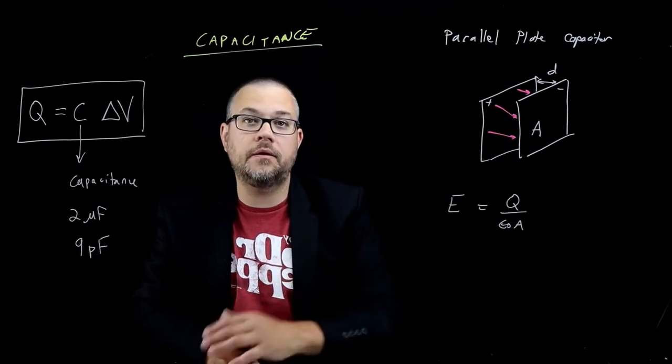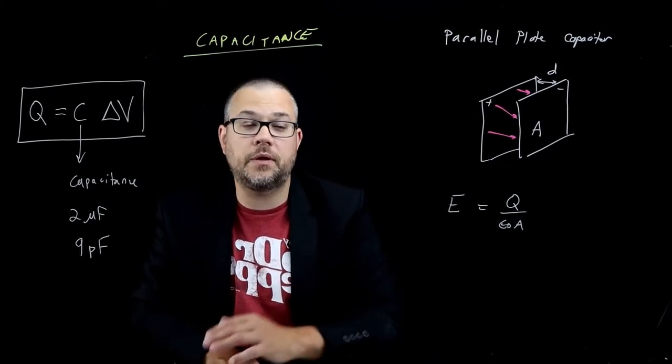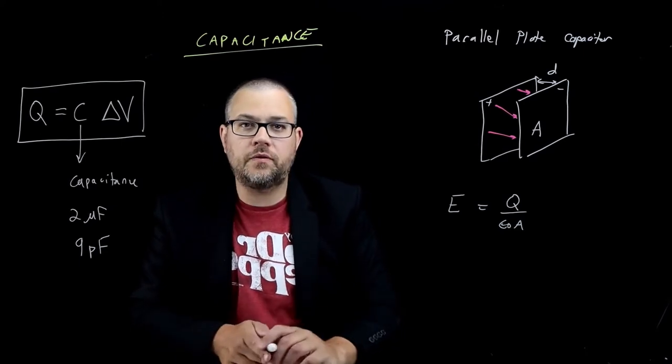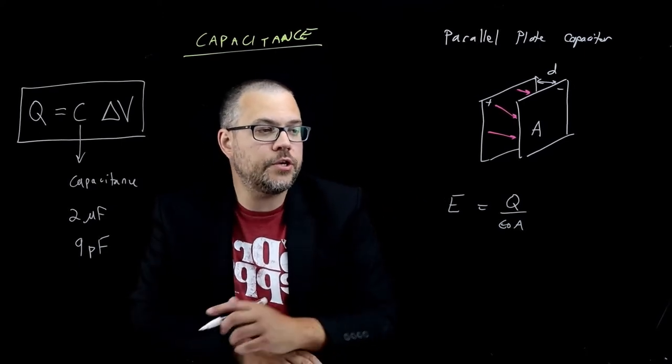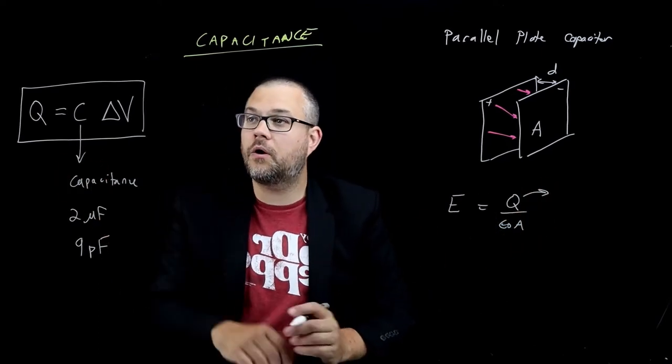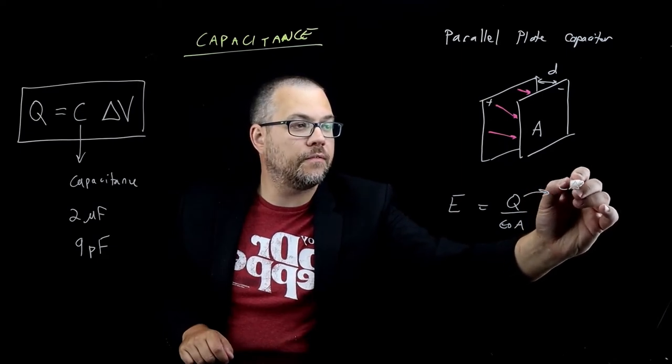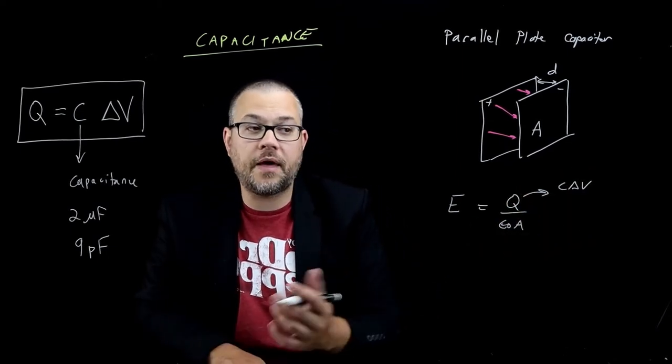Now, if that's the case, if we've got an ideal parallel plate capacitor, this is the electric field between the plates. Now I'm going to make two small changes to this equation here. One of them is with this Q right here. I'm going to use our equation defining capacitance. Q, of course, is equal to C times delta V, so I'm going to replace Q with that.